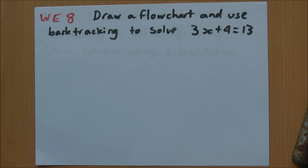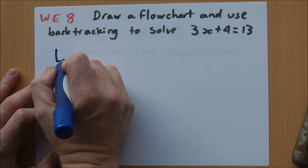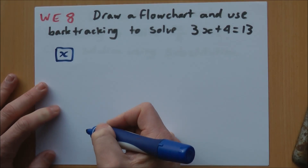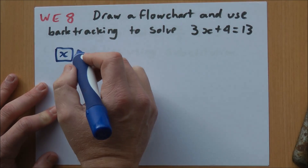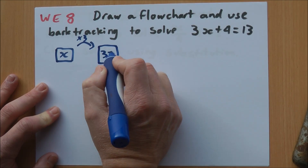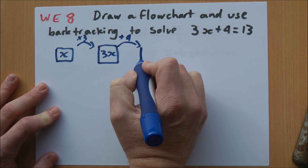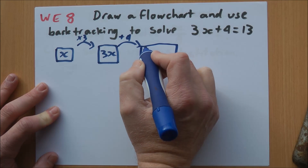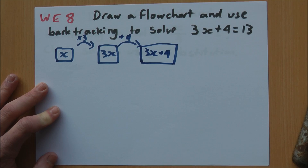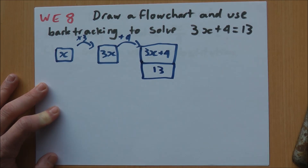Worked example 8: draw a flowchart and use backtracking to solve the equation 3x plus 4 equals 13. Let's start with our flowchart. I'm going to start with x. What am I doing to my x? I'm multiplying by 3, which gives me 3x. Then I'm adding on 4. 3x plus 4. And I know that 3x plus 4 equals 13, so it equals 13.